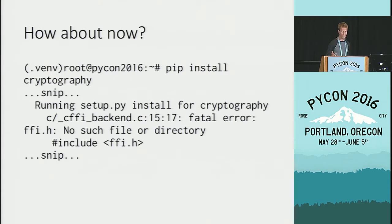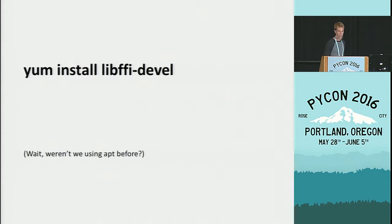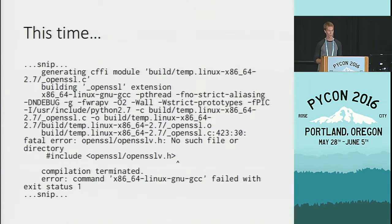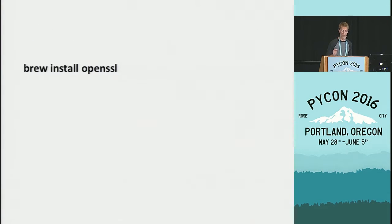How about now? Not quite. We're all ops and C toolchain experts, so this is clearly because we're missing the libffi development headers — cffi uses libffi to do this. So we install our libffi development headers. Still nothing. We've come this far and I refuse to let a computer beat me, so let's go find the OpenSSL development requirements and install those.